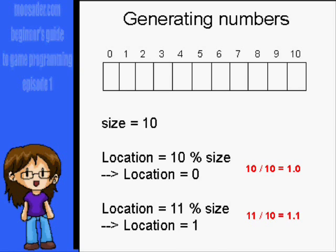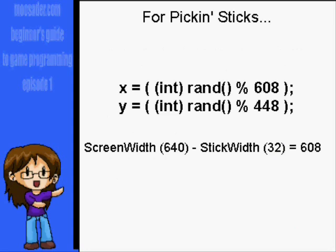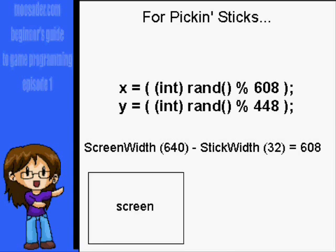For generating the random coordinates of the stick, it will be generally from 0 to the screen width and 0 to the screen height. However, you have to subtract this by the stick width and height. Otherwise, if its x coordinate is generated to the screen width, its very left side will be on the very edge of the screen, and so the entire thing will essentially be off the screen and impossible to see.